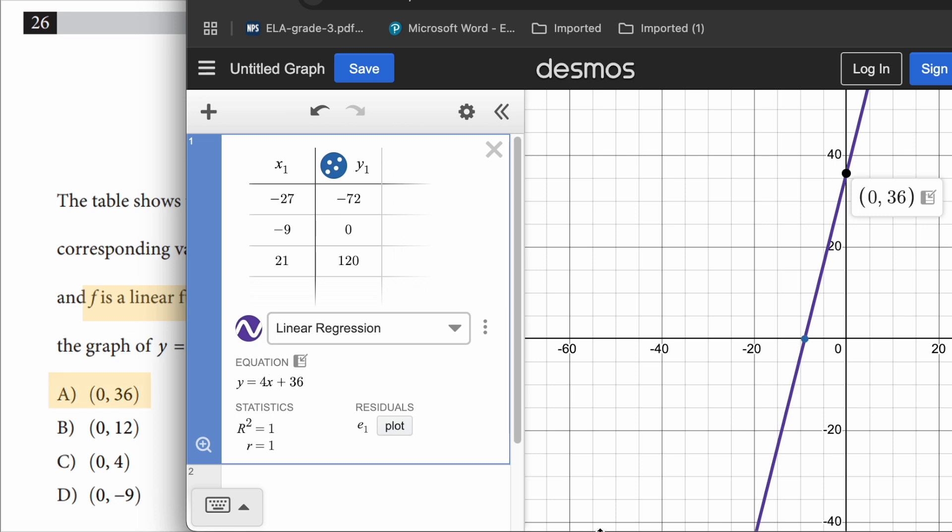The answer choice is A, (0, 36). So these are some of the tricks that you must know if you're taking digital SAT. This saves you tons of time, and you can use that time to review difficult questions in the end.